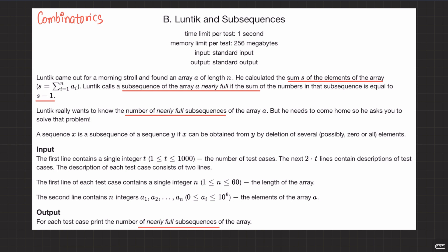What we have is: this guy Luntick has calculated the sum of all the elements of an array. We are given an array, we calculated the sum of all the elements and we call it S. We call a subsequence of an array 'nearly full' if the sum of numbers in that subsequence is equal to S minus 1.